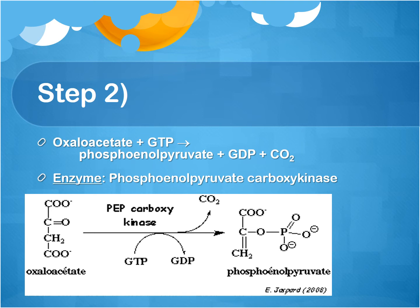The second step of gluconeogenesis is the conversion of oxaloacetate into phosphoenolpyruvate. This requires GTP and releases CO2. The enzyme used in this mechanism is called phosphoenolpyruvate carboxykinase.